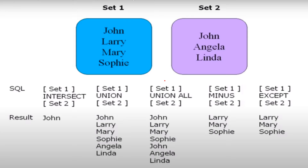If you see, John is in both set one and set two, but it's given only one time — which means duplicates are removed, and only one time will it return the value. The next one is UNION ALL — if we want duplicates also which are in both result sets, then we use UNION ALL. It gives the same result set as UNION but it will not remove the duplicates.